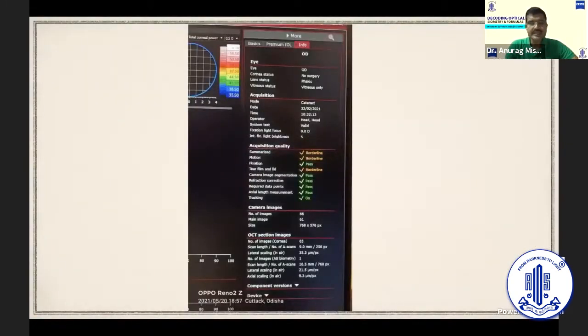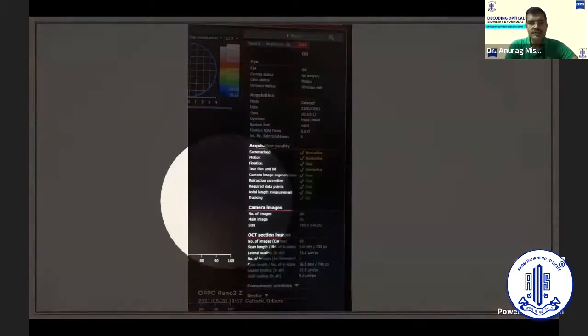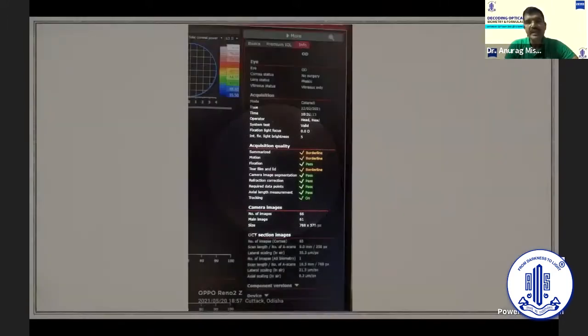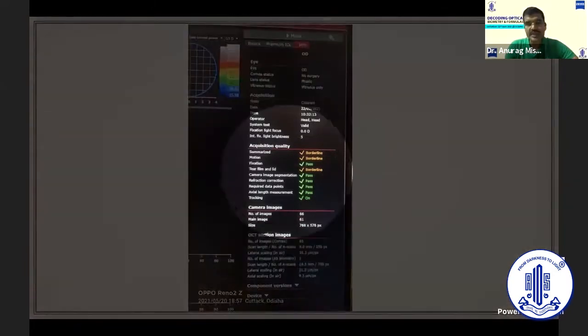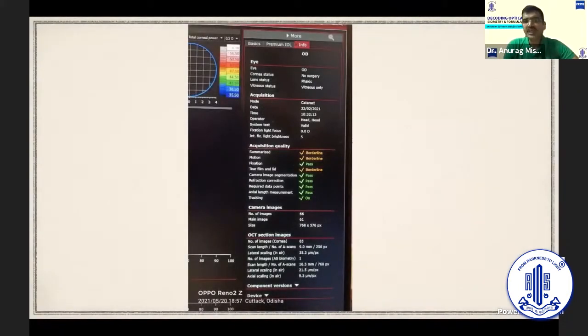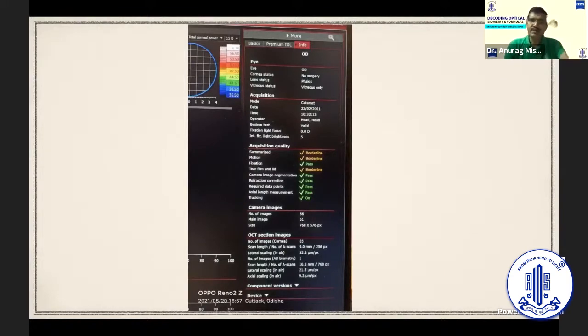This is the reliability indices of the Anterion, which shows here the acquisition quality. As you can see, there are various parameters here, including right in the middle, the tear film and the lid, the tear film validity is also there. So if it is borderline, you can still go ahead and accept it. If it is not borderline and if it's poor, then the machine always cautions you against taking that reading into account and planning your IOL with that.